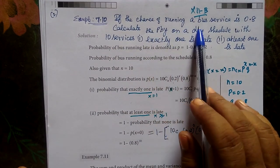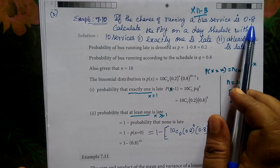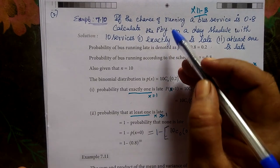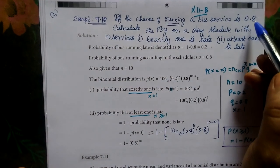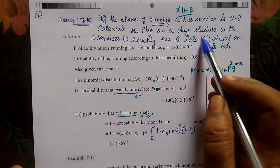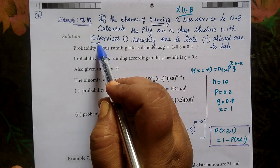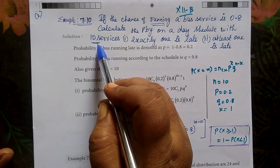If the chance of running a bus service according to the schedule is 0.8, calculate the probability on a day schedule with 10 services. So n equals 10.